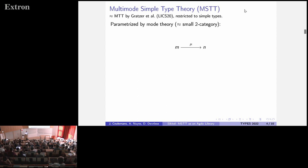So what is this multimode simple type theory or MSTT? Well, actually, it's a restriction of multimodal type theory or MTT by Gratzer and others, but restricted to simple types. So at the syntactic layer, there is currently no support for dependent types. And just like MTT, MSTT is parametrized by a mode theory, which is basically just a small two category. And today I won't even talk about two cells, so you can just think of it as a small category. And the objects of such a mode theory are called modes, and the morphisms are called modalities. And so at every single mode, MSTT will provide a complete type system with functions, pairs, natural numbers, etc.